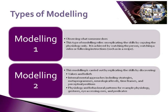The second type of modelling also involves discovering the internal processes that are happening when a person achieves excellence. So it discovers not only what the person does, but also what values and beliefs the person holds that enables them to achieve excellence. It investigates the internal mental approaches of the person, including strategies, metaprograms, neurological levels, timeframes and perceptual positions, all of which we will investigate in this module. It also involves discovering physiology and behavioural patterns found in body language, gestures, eye accessing cues and predicates.